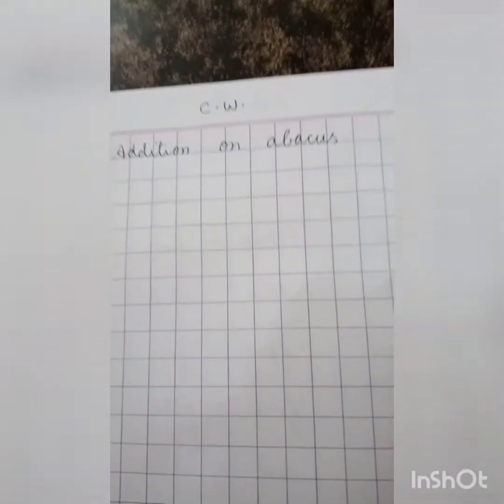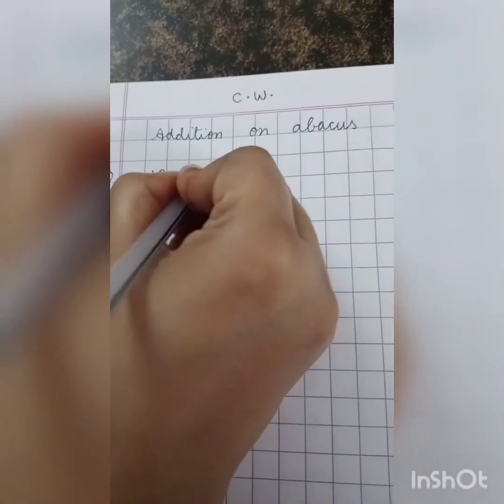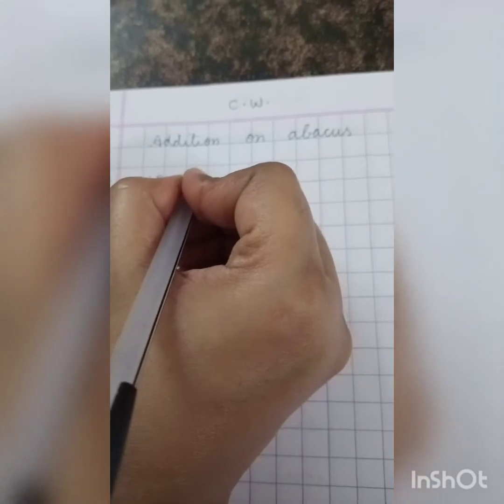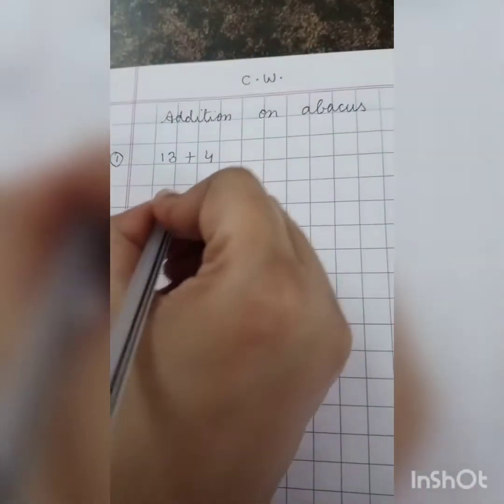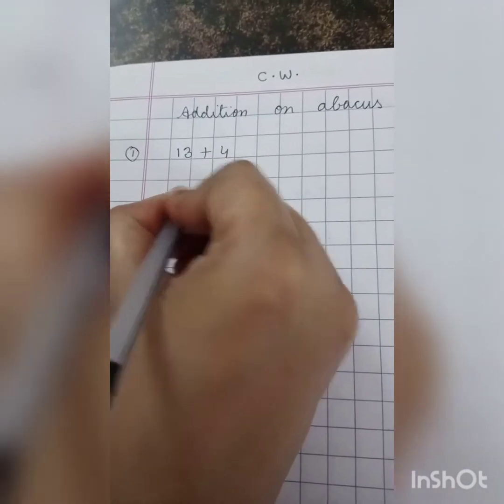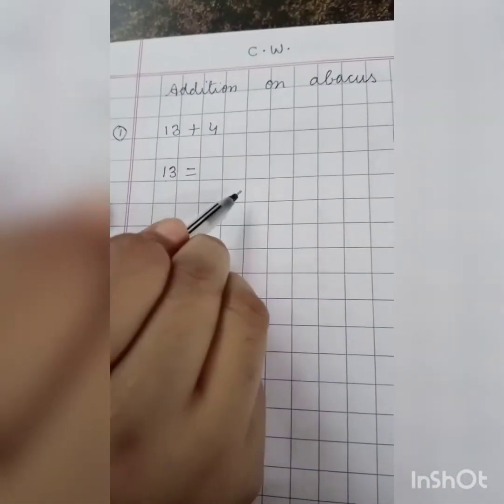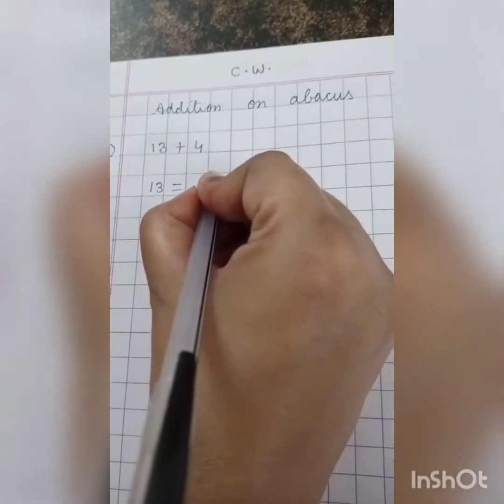The first number which we are going to add is 13 plus 4, 13 plus 4. So what ma'am is going to tell you, the first step, what will be the first step? 13. Now we will write 13 in expanded form. What is expanded form?